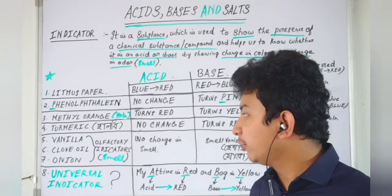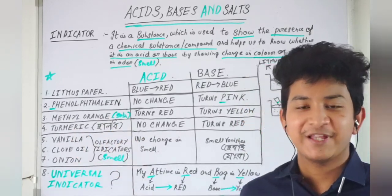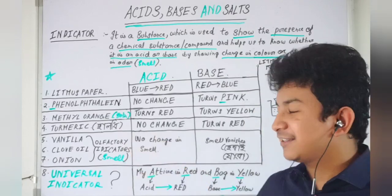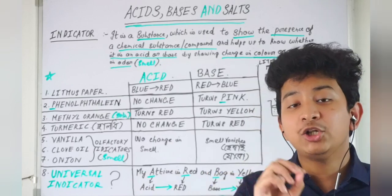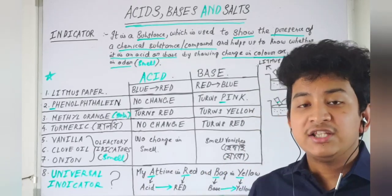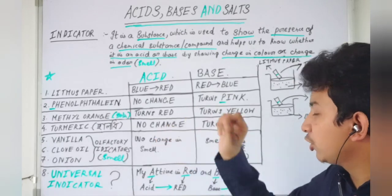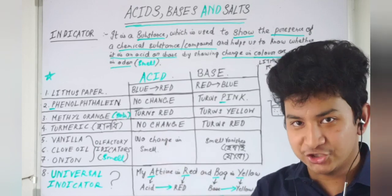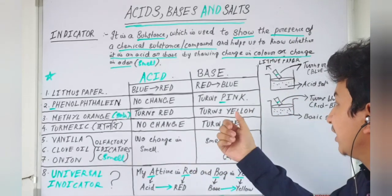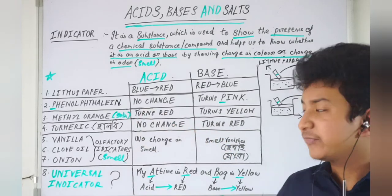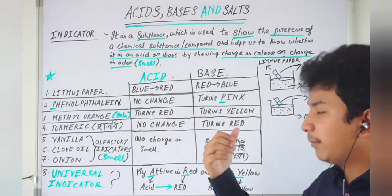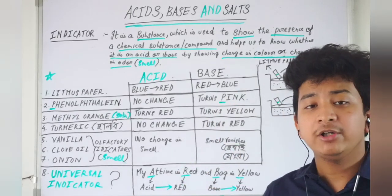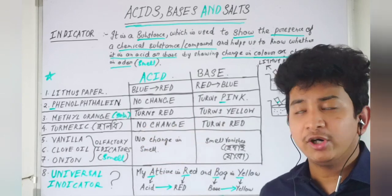The fourth indicator is turmeric. Turmeric has an orange color. When we add turmeric to an acidic solution, the orange color does not change. But when we add turmeric to a basic solution, it turns red. That means turmeric changes from orange color to red color in the presence of base, but the orange color does not change in the presence of acid.